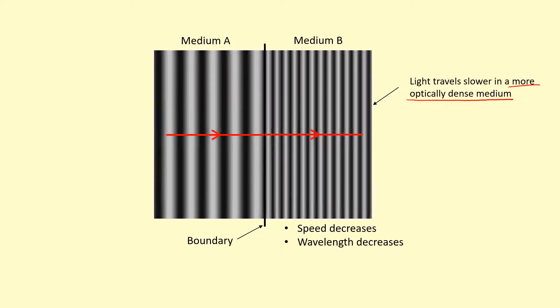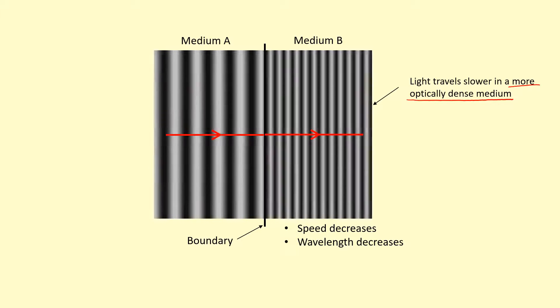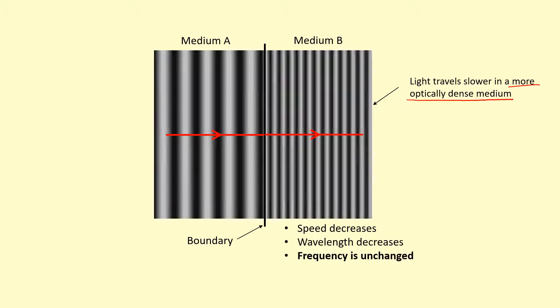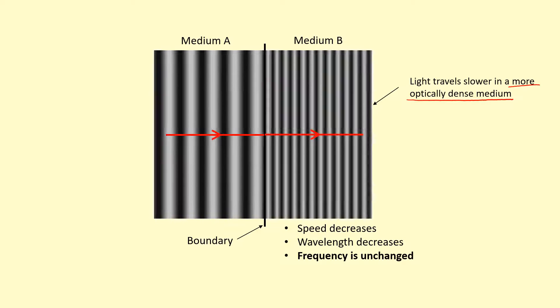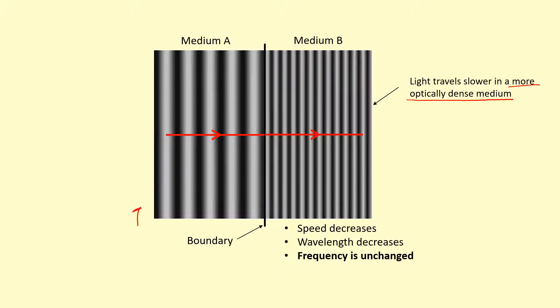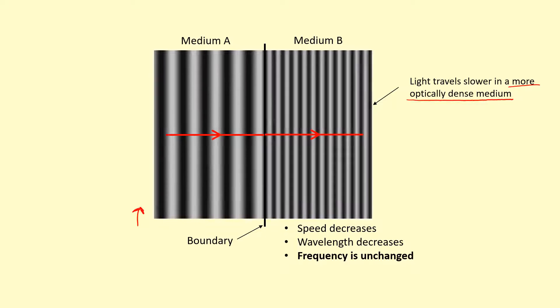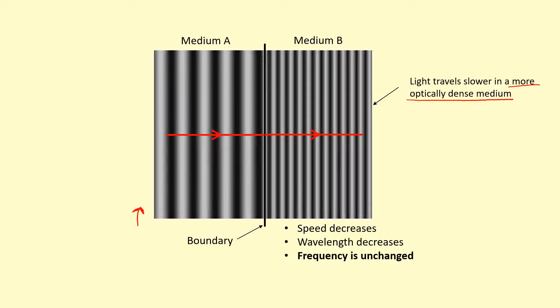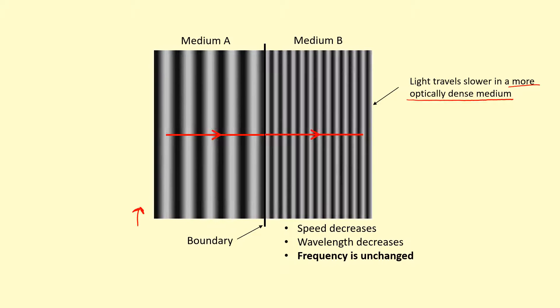One thing that doesn't change when it goes from medium A to medium B is the frequency. The frequency is unchanged. The number of waves per unit time doesn't change because that's determined by the source on the left-hand side here, that's creating the number of waves. So the number of waves emitted per unit time won't change unless the source changes it.